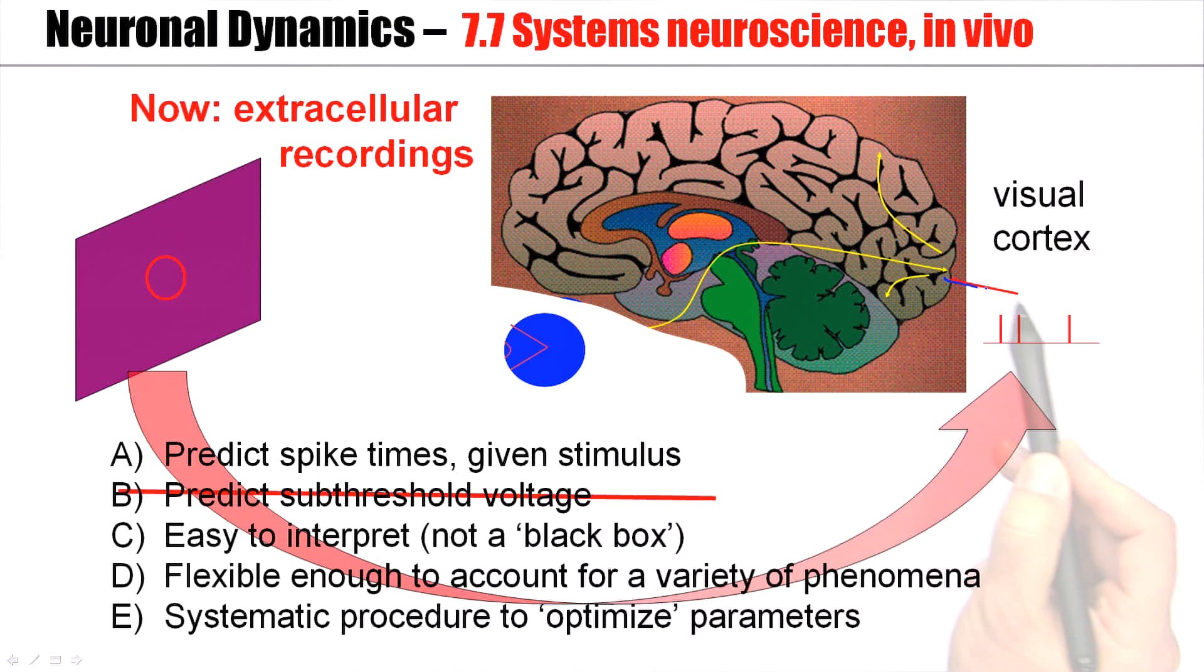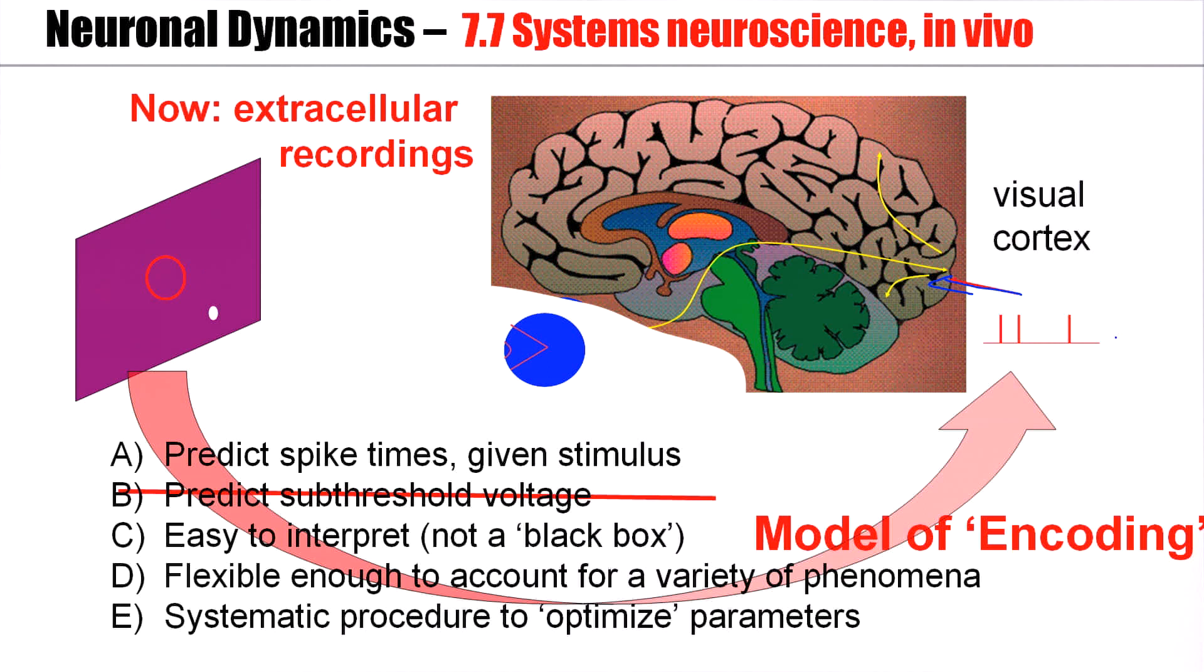Suppose you record from a neuron in visual cortex while a stimulus is presented, and the stimulus may appear at different locations, randomly all over the field. And whenever it falls inside the sensitive zone, the receptive field of the neuron, the neuron is more likely to emit a spike. A model of encoding means that we want to understand the transform from the stimulus to the spikes that the experimentalist observes with the electrode.